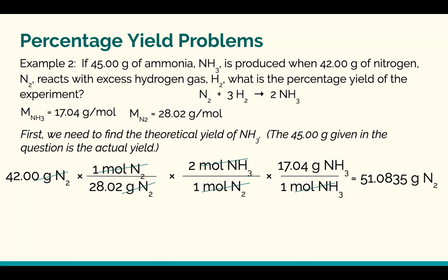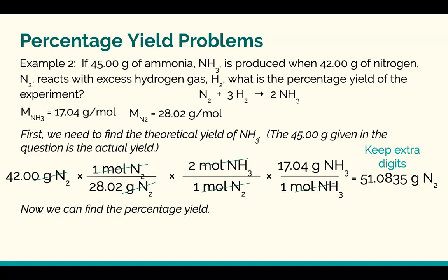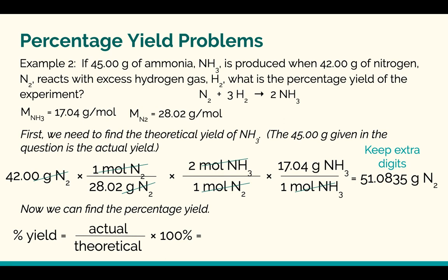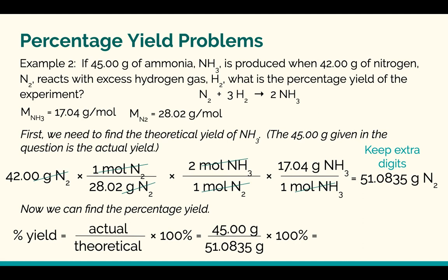Keep in mind we're not done the question yet, so keep a couple of extra digits on that number. Now that we have the theoretical yield, we can find the percentage yield. Percentage yield is actual over theoretical times 100%. The actual was 45.00 grams; we just calculated the theoretical. Dividing those and multiplying by 100%, we get 88.09%.